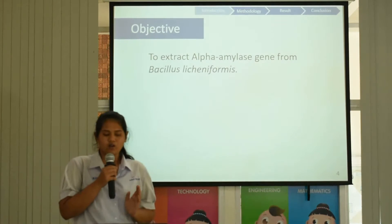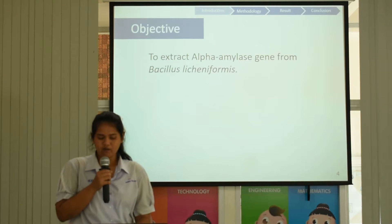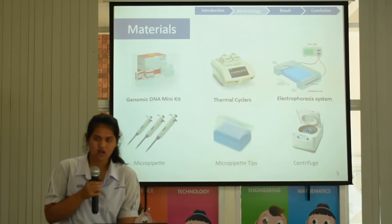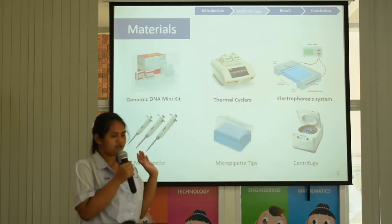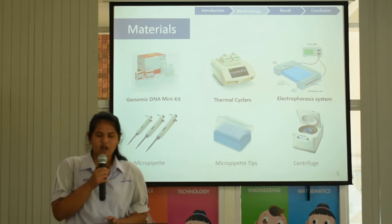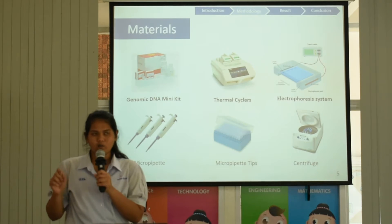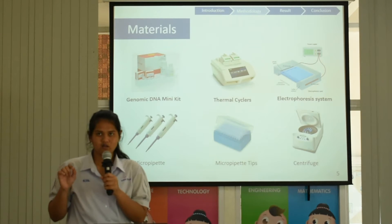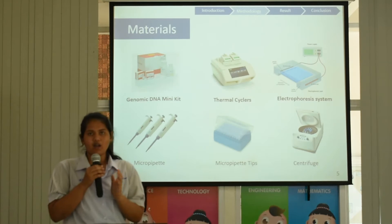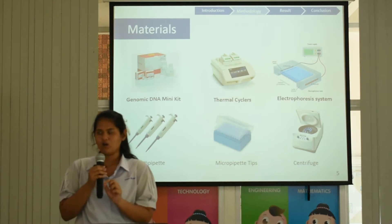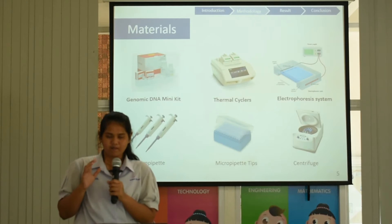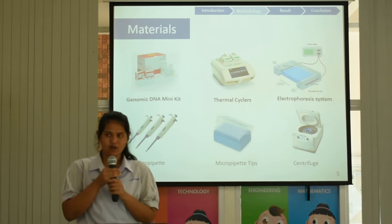The objective is to extract alpha-amylase from Bacillus licheniformis. I use many bacteria for this project, and made a genomic DNA miniprep. I use these two extracts — genome chromosome — I use in PCR technique, and electrophoresis system I use to resolve and alter bacteria in chemistry.